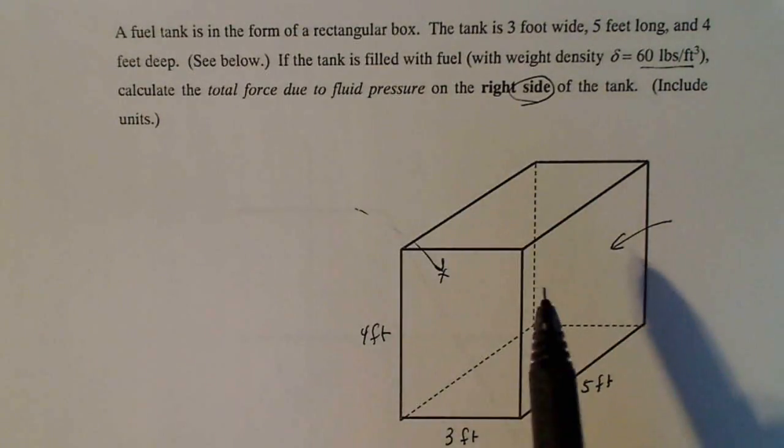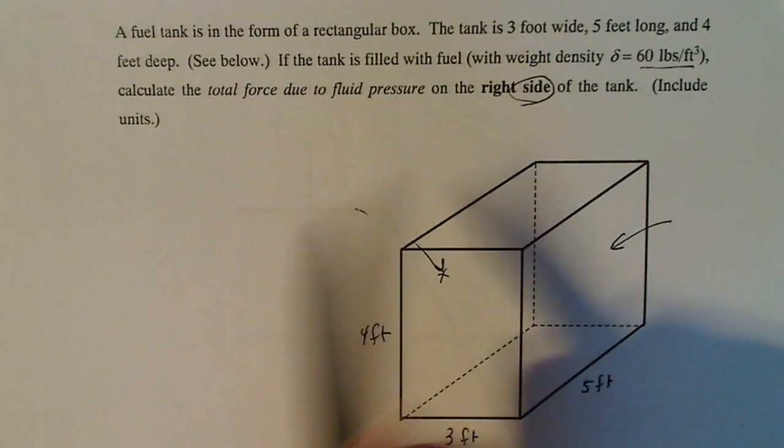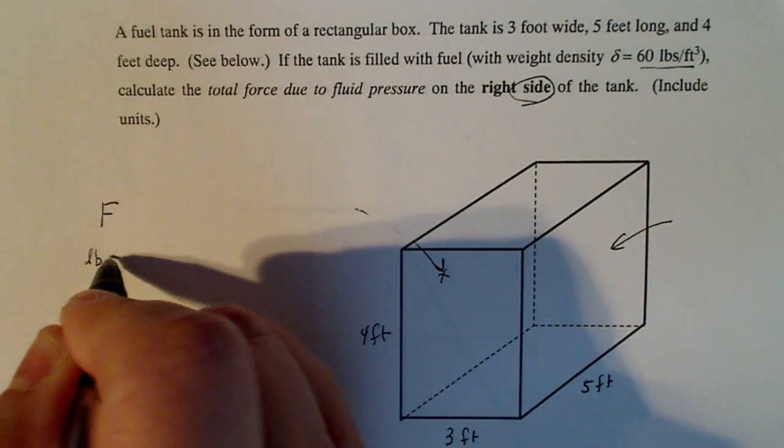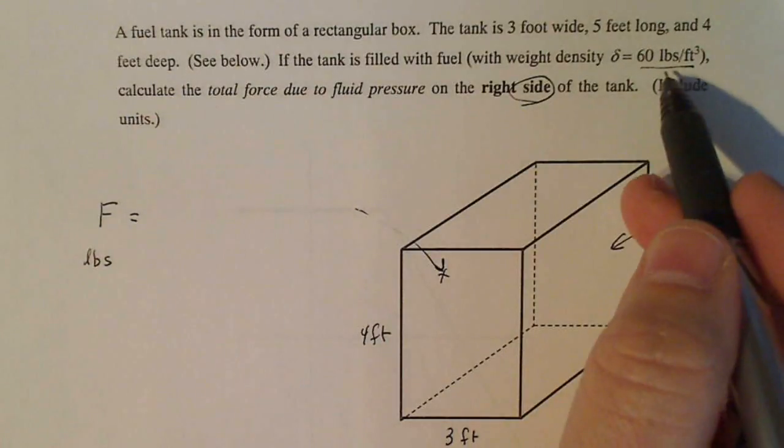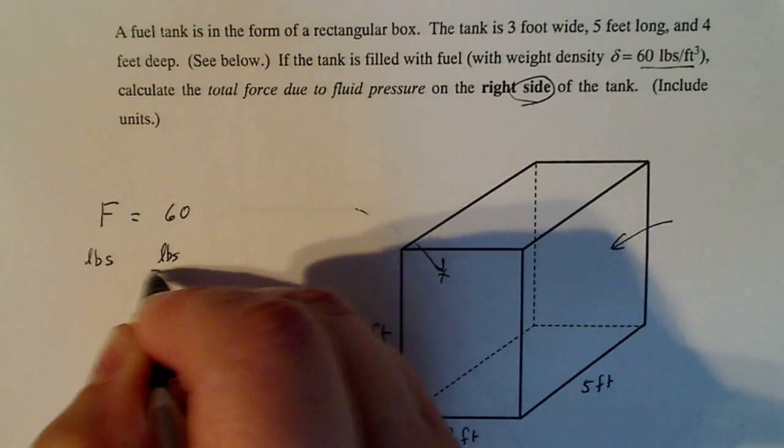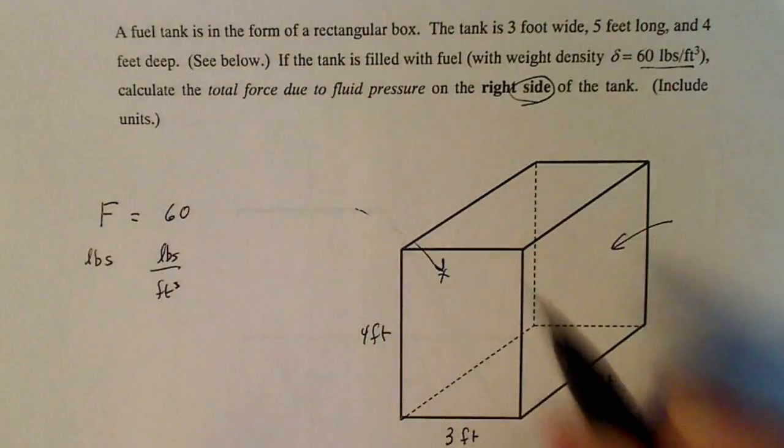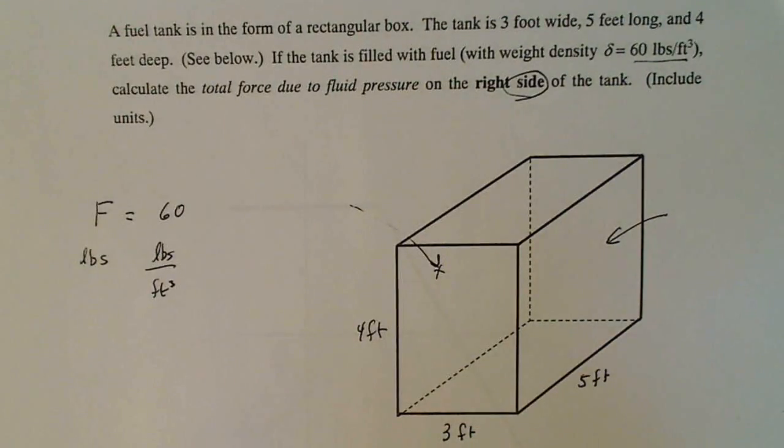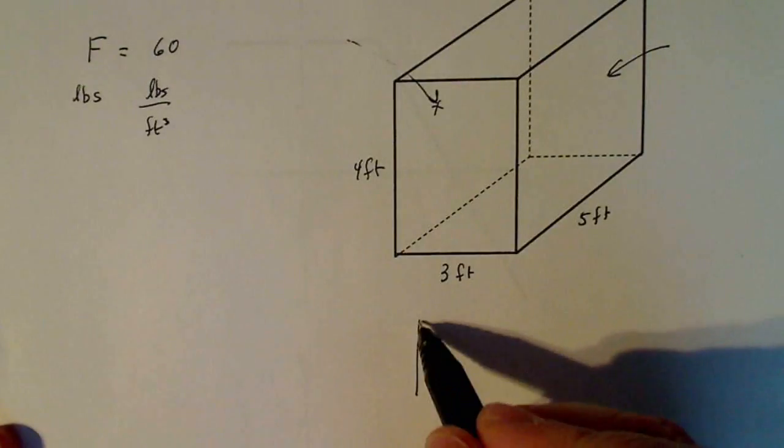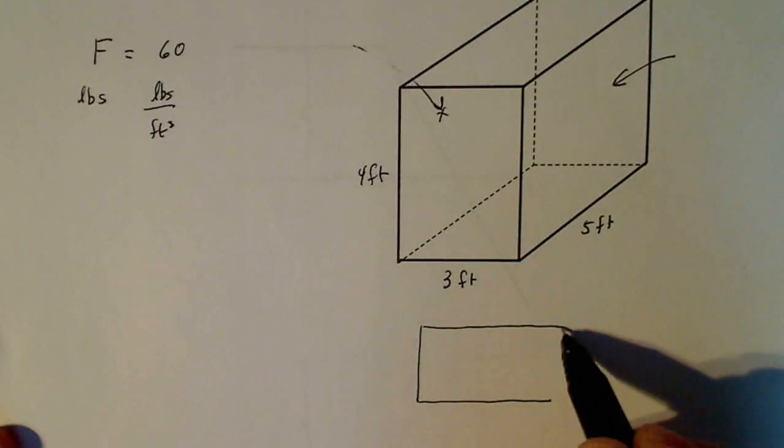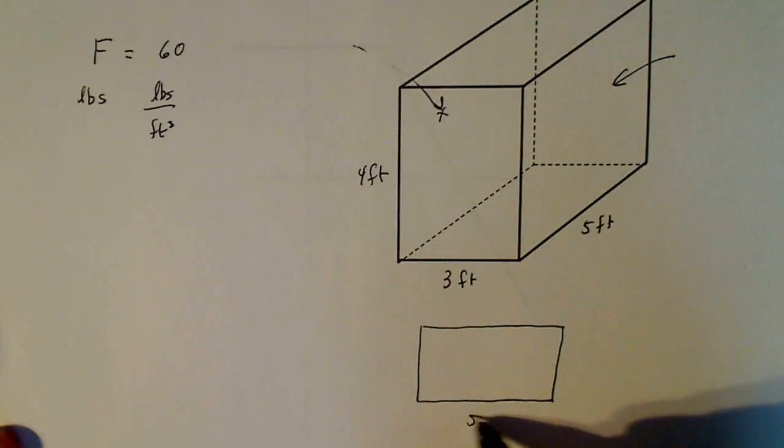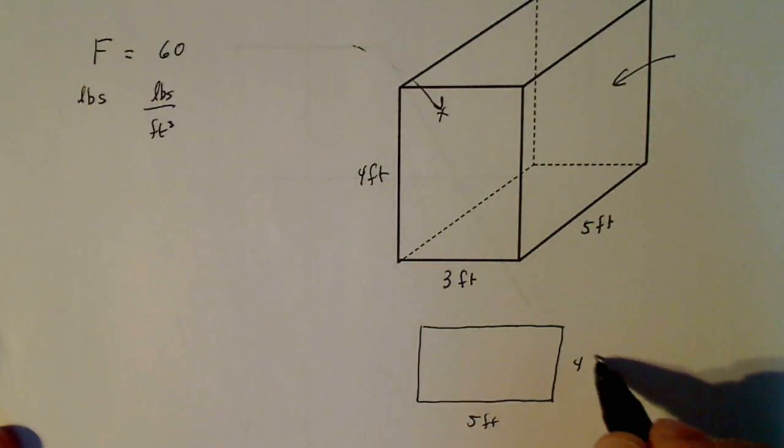So if I'm going to do the fluid pressure on the right side, that means I'm trying to find the force, which is the pounds on that side. Now I'm given a density of 60 pounds per cubic foot. And if I think about that side, if I look straight towards that side, this is five feet down here, and this is four feet here.